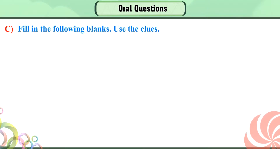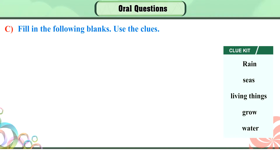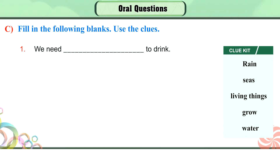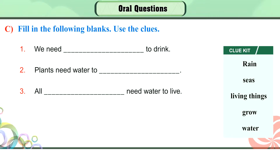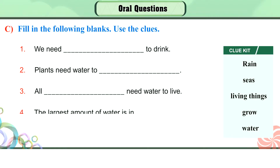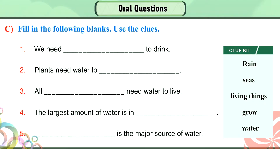C. Fill in the following blanks using the clues: rain, seas, living things, grow, water. 1. We need water to drink. 2. Plants need water to grow. 3. All living things need water to live. 4. The largest amount of water is in seas. 5. Rain is the major source of water.